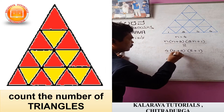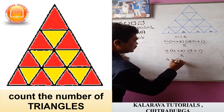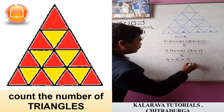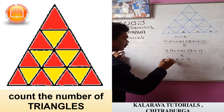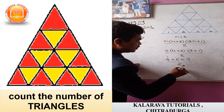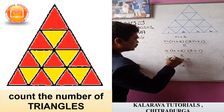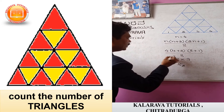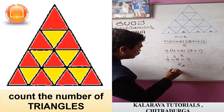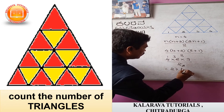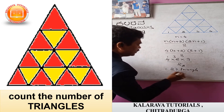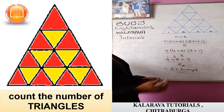It gives 4 into (4 plus 2) equals 4 into 6, into (8 plus 1) equals 9, divided by 8. Here: 4 ones are 4, 4 twos are 8; 2 ones are 2, 2 threes are 6. So 9 into 3 into 1 equals 27. Therefore, there are 27 triangles in this figure.